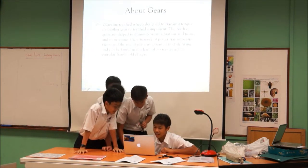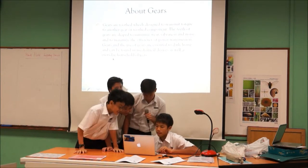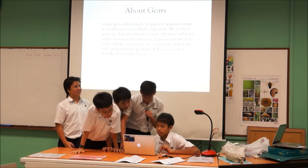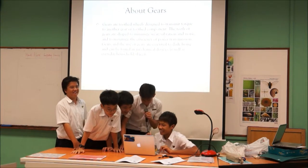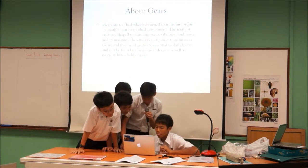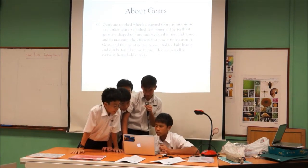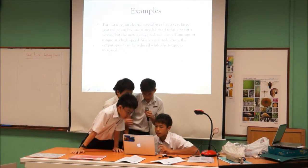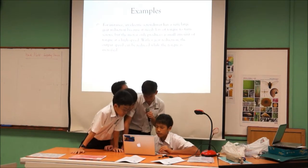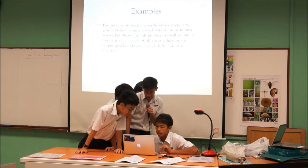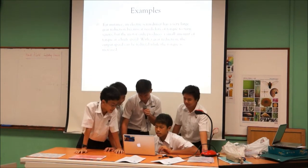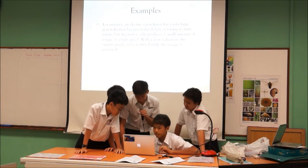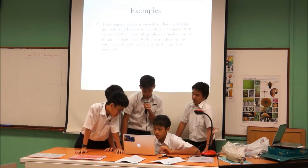What are gears? Gears are toothed wheels designed to transmit motion to another gear or toothed component. The teeth of gears are shaped to minimize wear, vibration, and noise, and to maximize the efficiency of power transmission. Gears are essential in daily life and can be found in mechanical devices as well as everyday household objects. For instance, an electronic screwdriver has a very large gear reduction because it needs a lot of torque to turn screws, but the motor only produces a small amount of torque at high speed. With a gear reduction, the output speed can be reduced while the torque is increased.